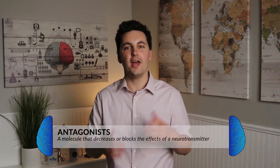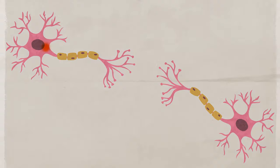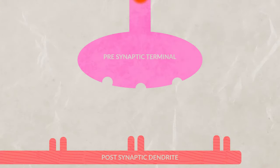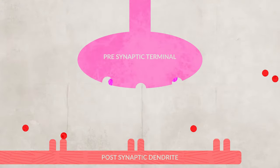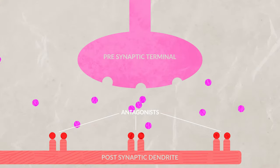Not all drugs enhance the effect of neurotransmitters. Some drugs called antagonists end up decreasing the effectiveness of neurotransmission. Antagonists can work in multiple ways: either by blocking the neurotransmitter from being released from the presynaptic axon terminal, or by connecting to the postsynaptic receptor and blocking the intended neurotransmitter from binding there. This reduces the effects from the neurotransmitter being blocked, or prevents any effect at all. An example would be medication for schizophrenia, which blocks dopamine receptors. Another example is alcohol, which blocks the release of glutamate, acting as a depressant for the nervous system.